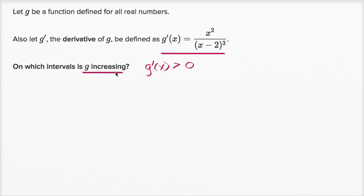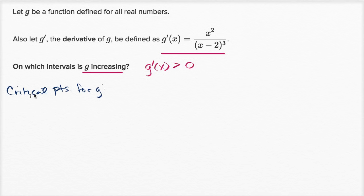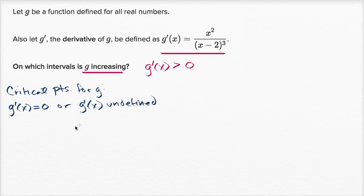There are a couple of ways we could approach this. We could inspect the structure of the expression and think about when it's greater than zero, or we could do it more methodically. Let's look at the critical points for g. Critical points are where g prime of x is equal to zero, or g prime of x is undefined. Those are the possible places where the sign of g prime could change.